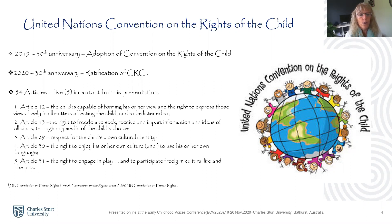In 2019 we saw the 30th anniversary of the adoption of the Convention on the Rights of the Child, and 2020 has been the 30th anniversary of its ratification, with all countries except one as signatories. This Convention continues to play a significant role in how young children live and learn, and is of particular importance for early childhood. The Convention consists of 54 articles, five of which are important to this presentation. These five articles include Article 12, which acknowledges that the child is capable of forming his or her own view and the right to express these views freely in all matters affecting the child and to be listened to.